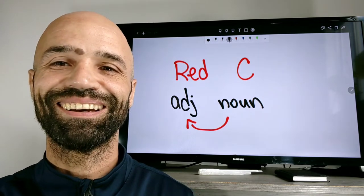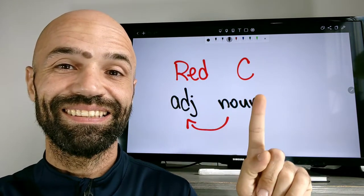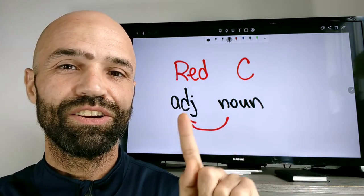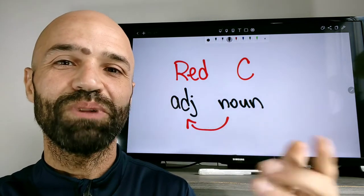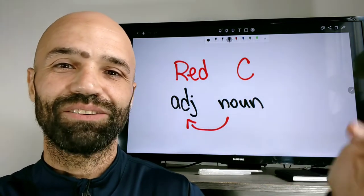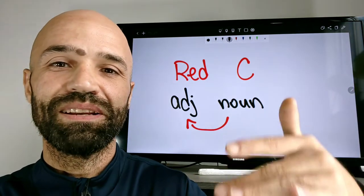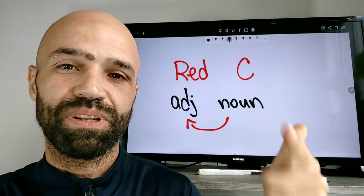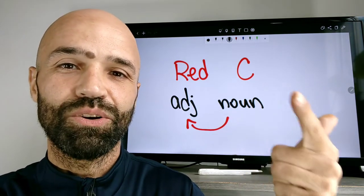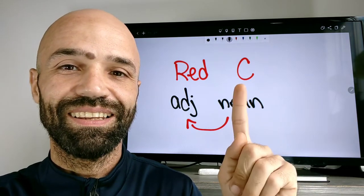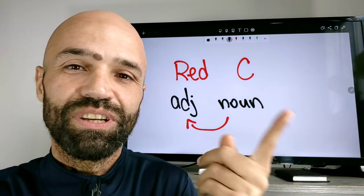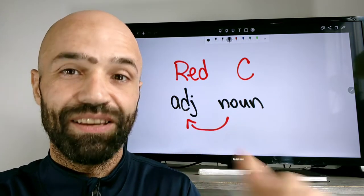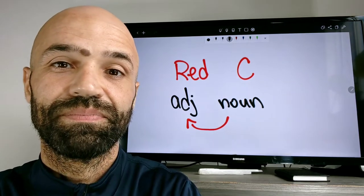Okay. Red C. Adjetivo Red e Substantivo C. Adjetivo é uma coisa que descreve uma coisa, né? Alto, magro, curto, longo, vermelho, preto, laranja, okay? E o substantivo é Person, place, thing, or idea. Pessoa, coisa, lugar, ou ideia, okay? Então é invertido. Em vez de ser C C Vermelho, é Red C. Okay. Então vamos lá.